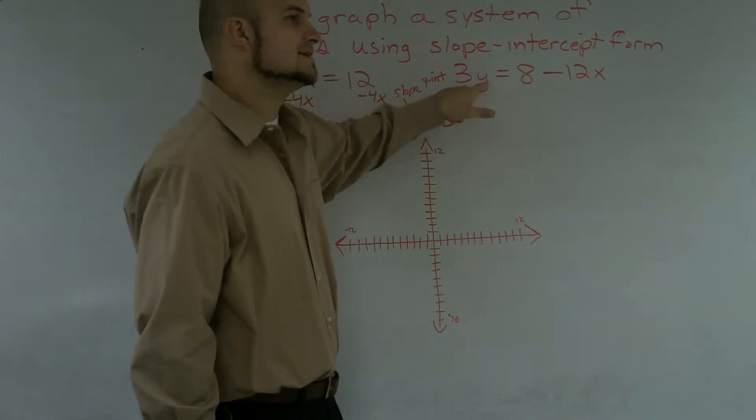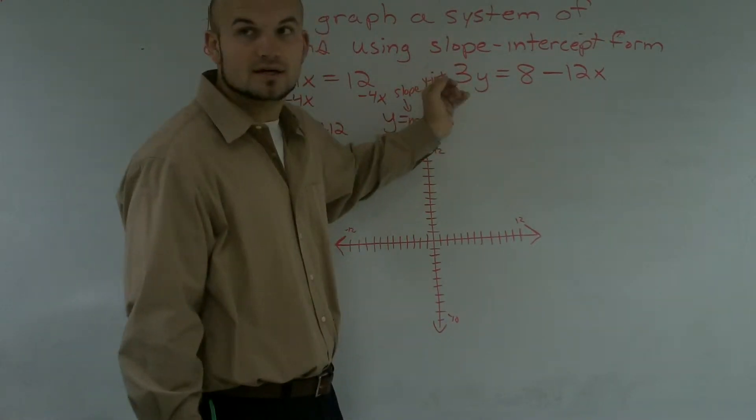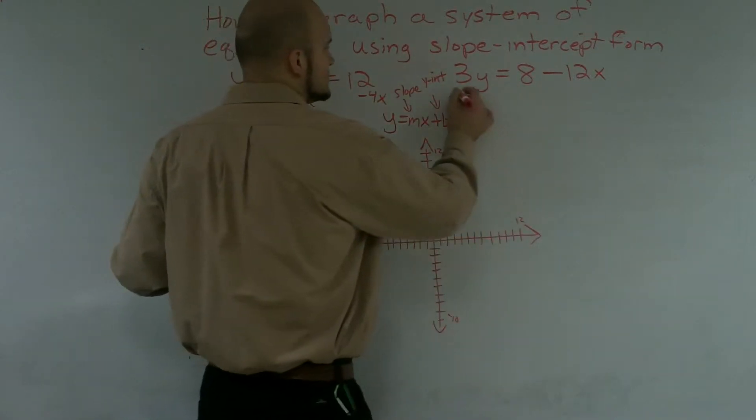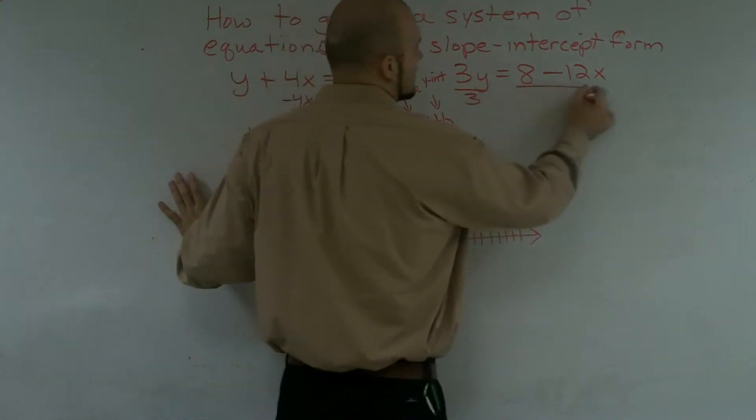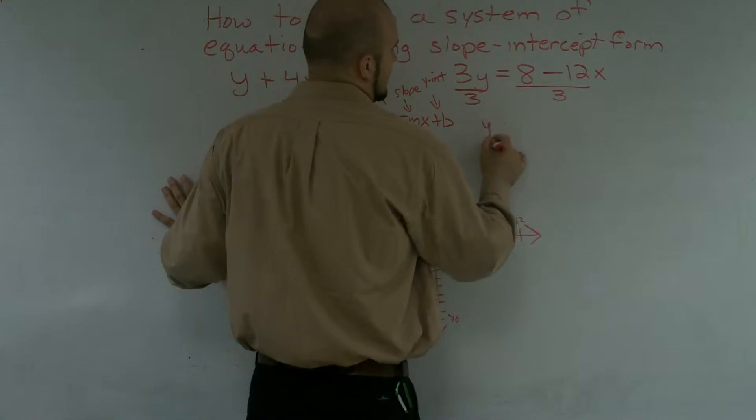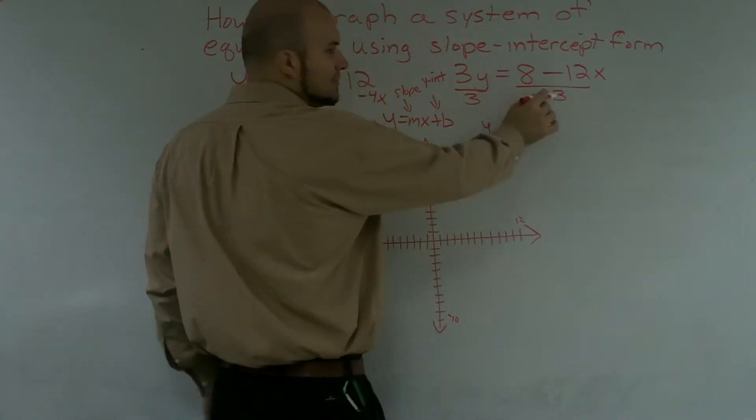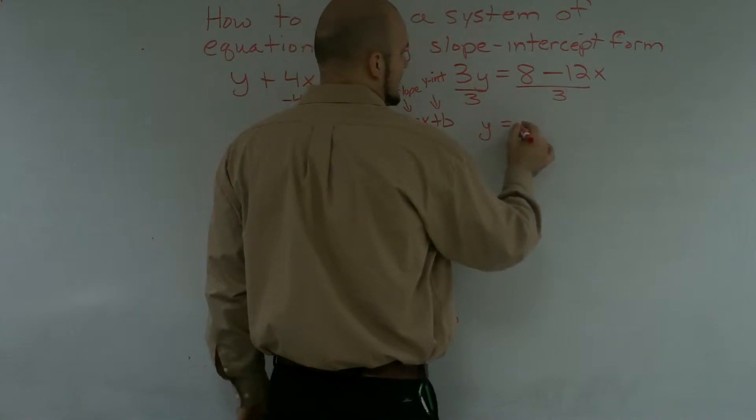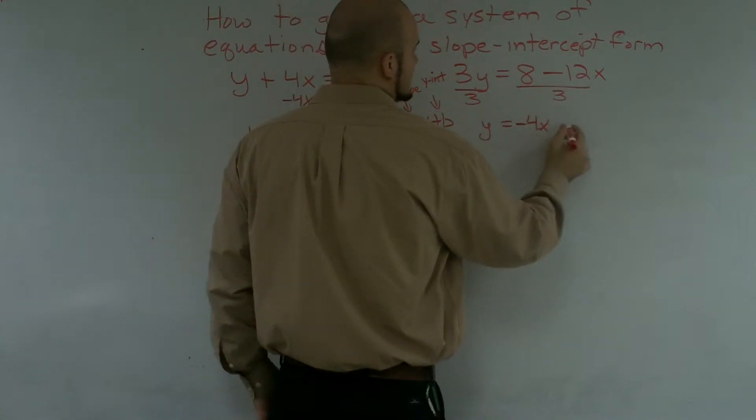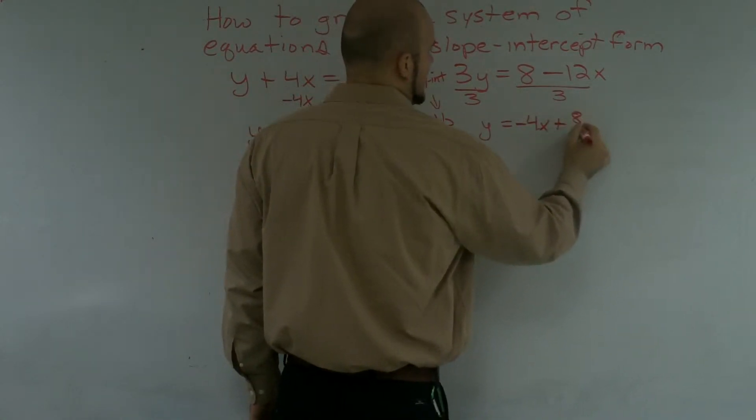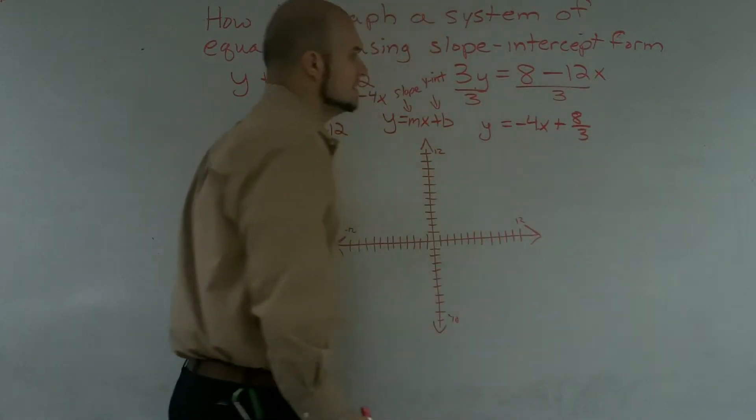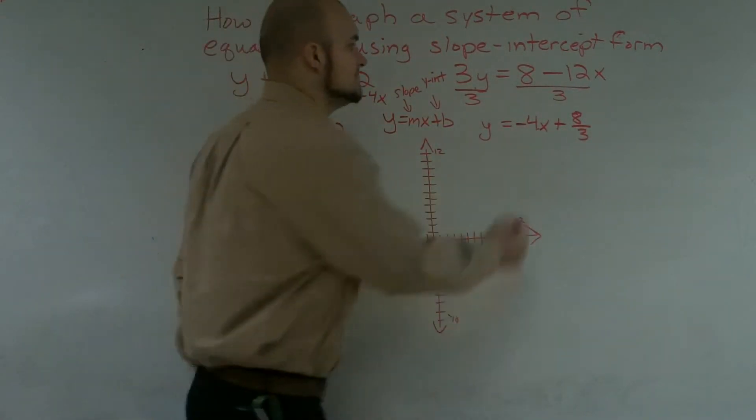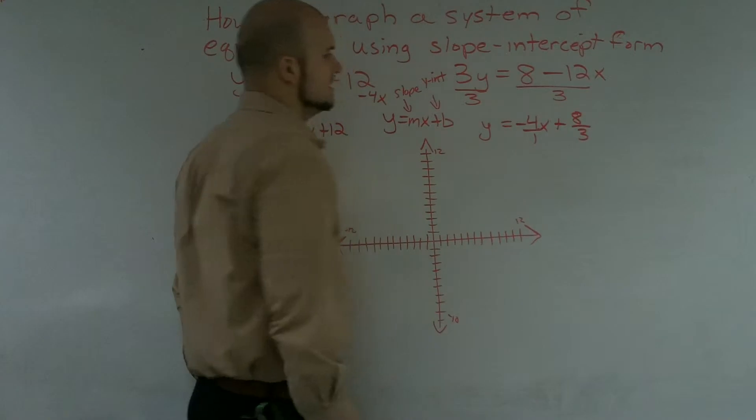Over here, to get my y by itself, I need to use the inverse operation of multiplication, which would be division. So I'm going to divide by 3 on both sides. I get y equals, and notice that 3 is divided by 8, and the 3 is divided by the negative 12x. So therefore, I get negative 4x plus 8 over 3. And again, what you'll notice is we have another whole number. We can make that a 1.